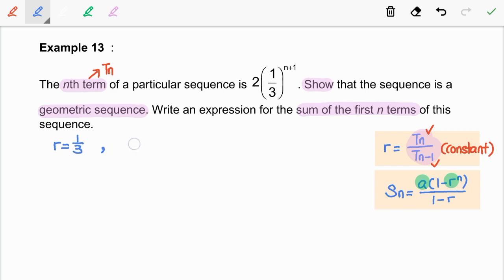So now, let us find the first term, a, which is equal to t1. Now, we are going to substitute n with 1 into the nth term. So, this is equal to 2 over 9.